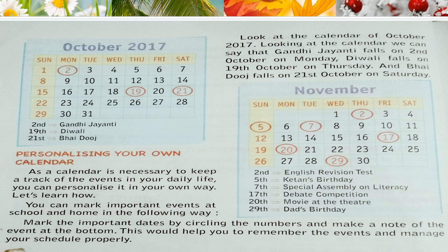As you can see on the screen, there is a calendar of November and we have marked a few dates in this calendar. Below the calendar, you can see why these dates are marked. In the same way, you can also personalize your own calendar and mark your important dates and events.